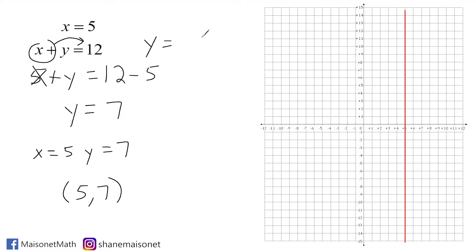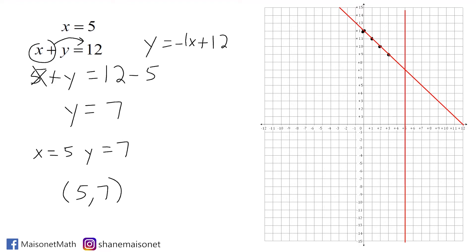I slide the 12 over to the right and write a plus in front of it because it is positive, and take this x term and write it as its opposite, which would be negative x. Remember, when we don't see a coefficient we should understand it really is a 1. So the y-intercept is positive 12, and the slope of this line is negative 1, meaning we go down 1 over 1 to make new points. Constructing a line through those points, we can see the intersection of the two equations, and the coordinates of that point are positive 5 for x and positive 7 for y, just as we solved using algebra.